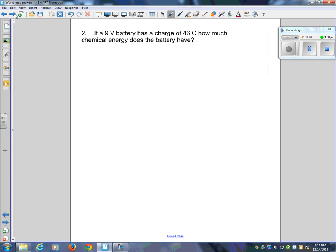Looking at question number 2 now: if a 9-volt battery has a charge of 46 coulombs, how much chemical energy does the battery have? Let's write out what we know. The voltage is 9 volts, the charge is 46, Q equals 46. How much energy does the battery have? E is our question mark.